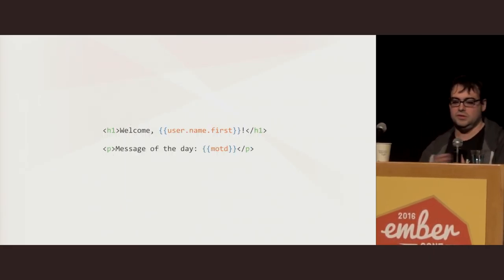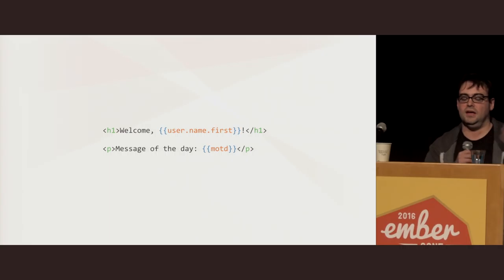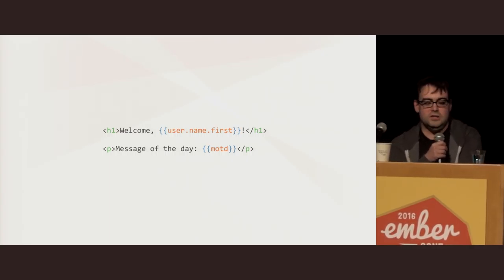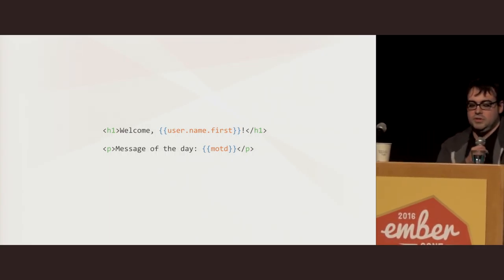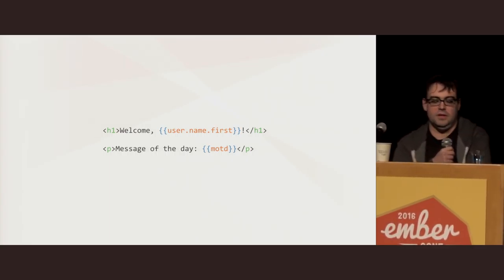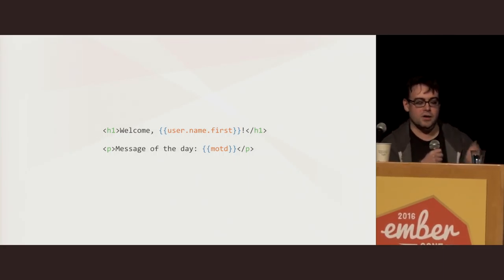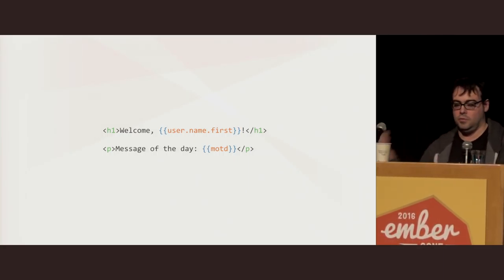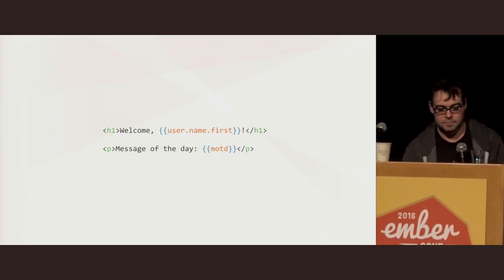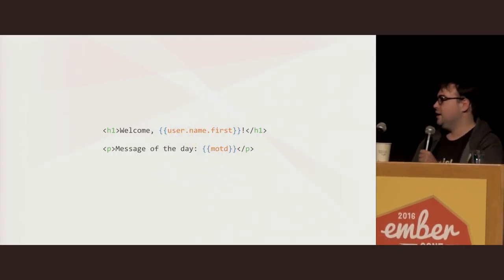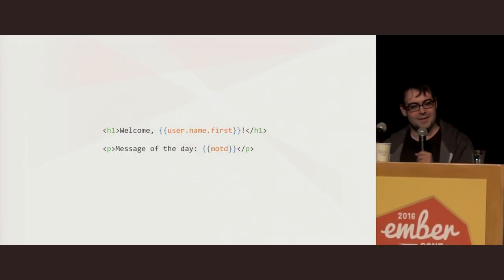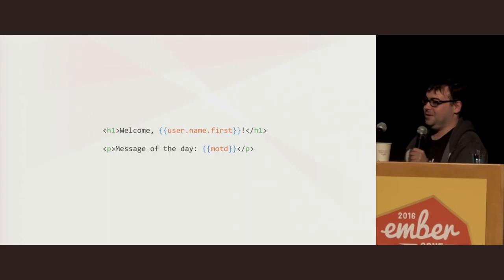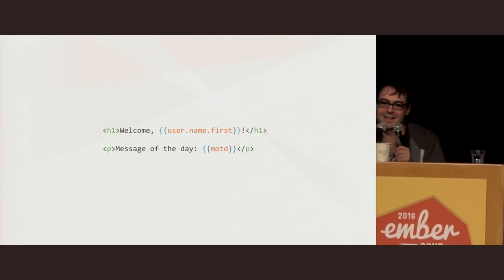At a high level, this slide is showing a template you've seen before. Each of the curlies here is represented by a reference. On the initial render, we pull a value out. On an update, we pull a value out and replace. If that felt simple, you're probably going to be okay. If that felt complicated, good luck.